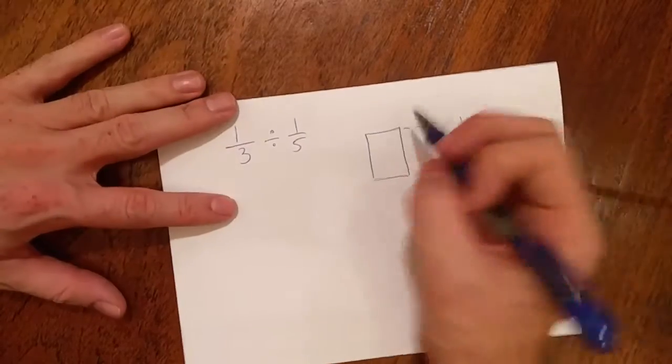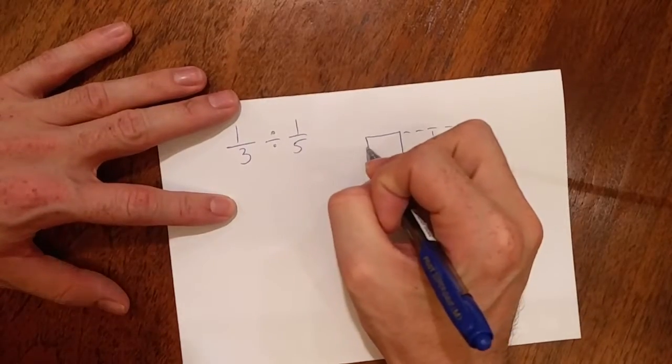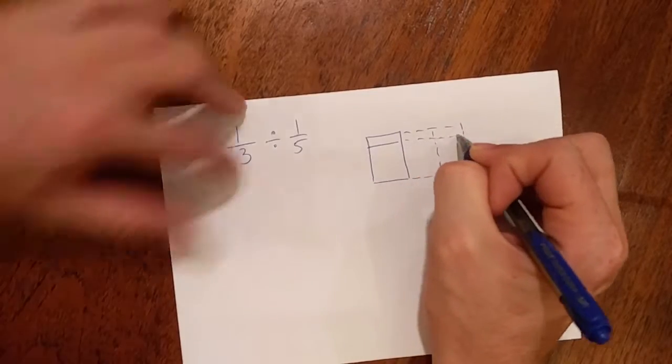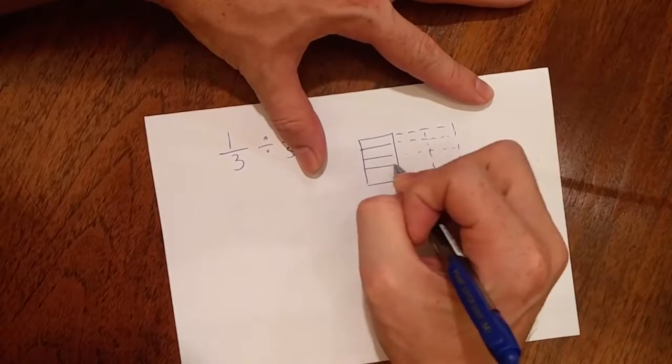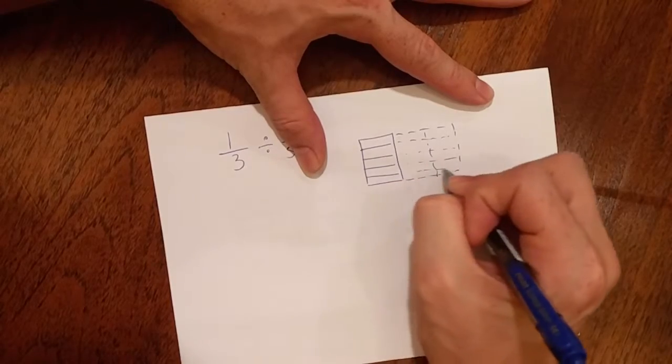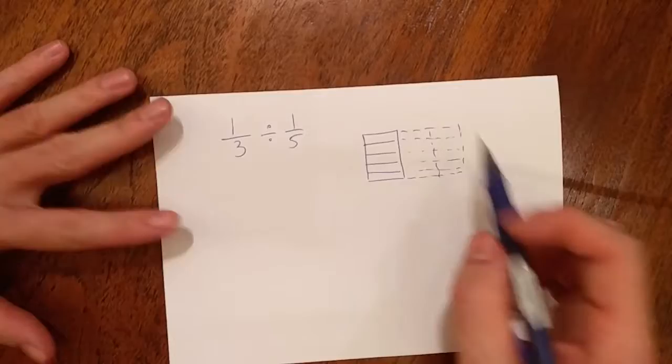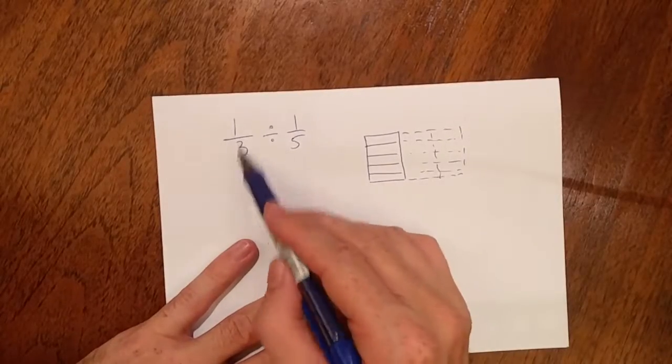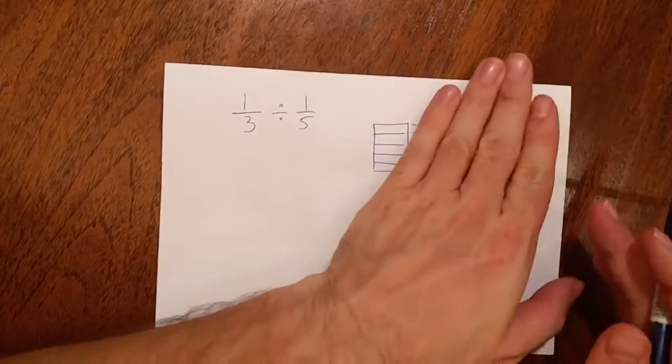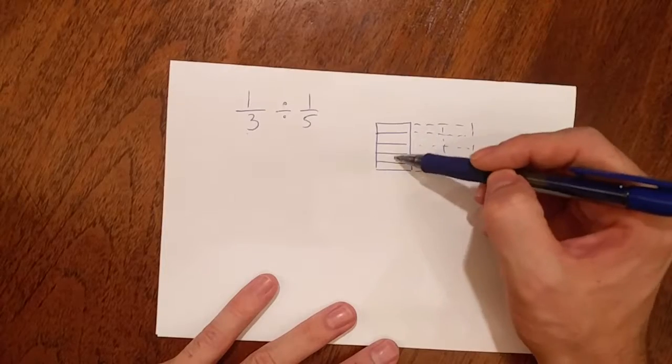So one out of the three, and I'm going to split this now up into fifths. Well I can split this up into fifths by going: here is one, here is two, three, and here is four. Four lines mean five sections. Now if we look at here, one third, so here's my one third, is the same as one, two, three, four, five...